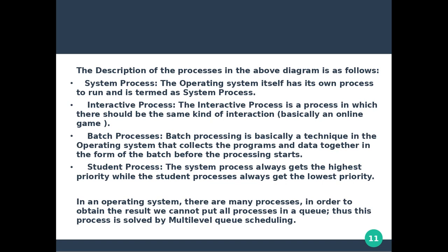The system process always gets the highest priority while the student process always gets the lowest priority. Student processes can be an example of a C program. In an operating system, there are many processes, and we cannot put all processes in one queue. This problem is solved by multi-level queue scheduling.